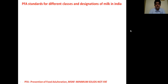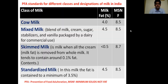PFA stands for Prevention of Food Adulteration. Here are different classes of milk and their fat percent in milk as well as MSNF. MSNF stands for Minimum Solids Not Fat. These are two important parameters of milk: fat percentage and MSNF percentage.